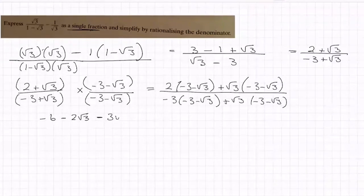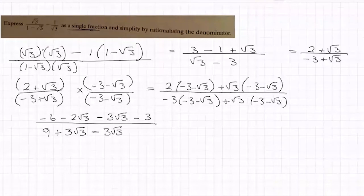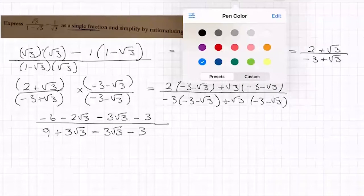And then I go on to plus √3 by minus √3, where plus by minus is a minus. √3 by √3 is 3. And then on the bottom, I have minus 3 by minus 3, which is 9. I have minus 3 by minus √3, so minus by minus is a plus, 3√3. Then in the next part, I have plus by minus is a minus, 3√3. And then I have plus by minus is a minus, √3 by √3 is 3.